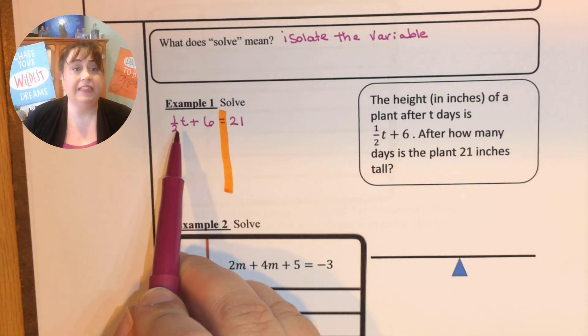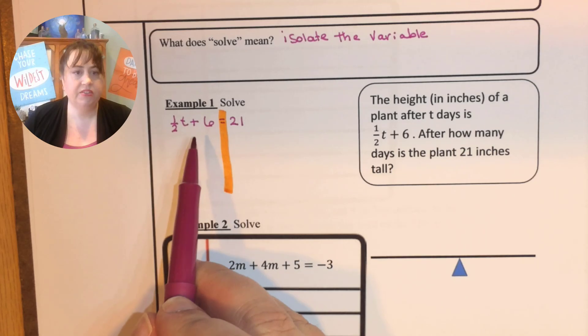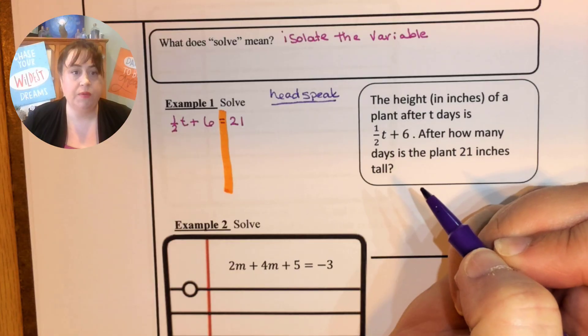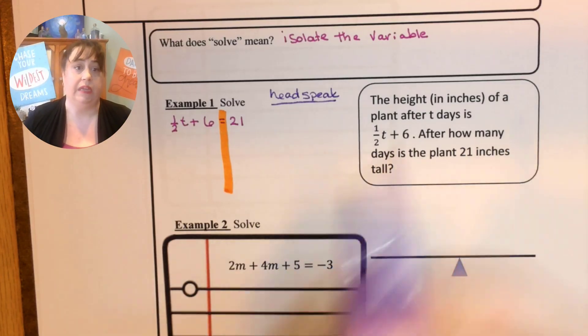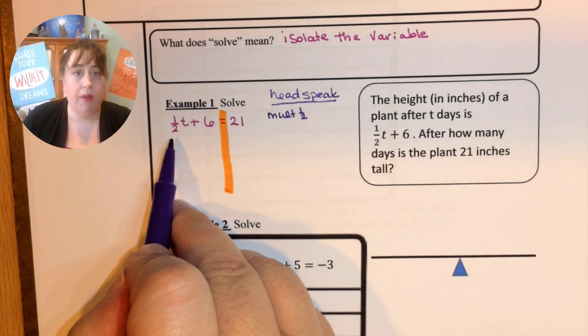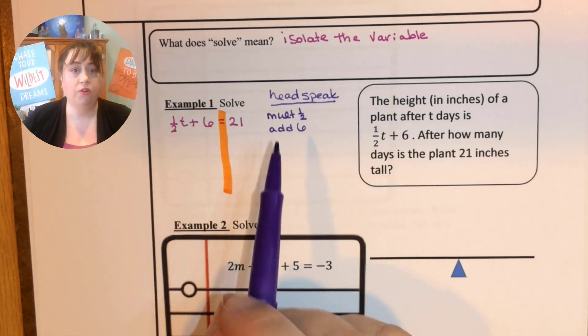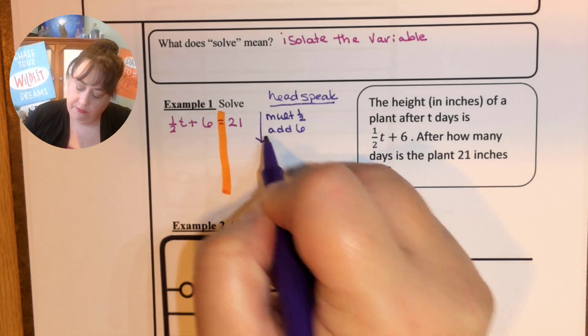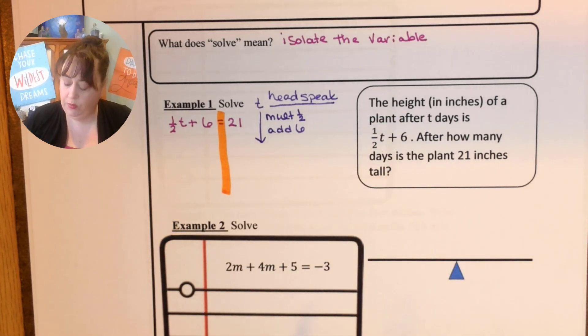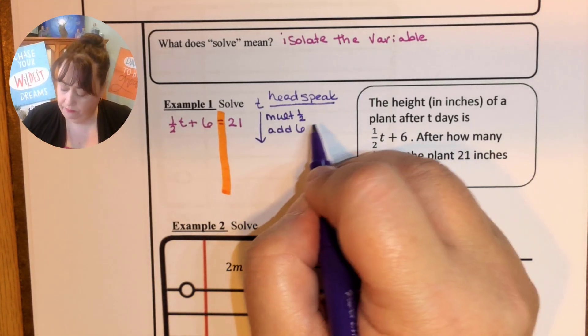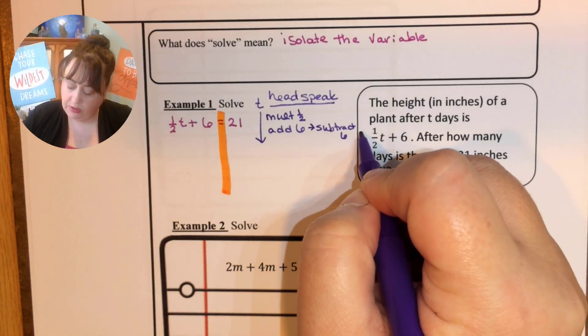So we ask ourselves what was the last thing that happened to t? And the last thing that happened to t was that we added six. So one way to do this is to do something that I call head speak. What the head speak does is we start with t and we ask ourselves what first happened to t? If we had t alone we multiplied by one half and then after we multiplied by one half we added six. In order to undo to get back to t we have to go in reverse order. So the inverse operation to add is subtract. So now we are going to subtract six.